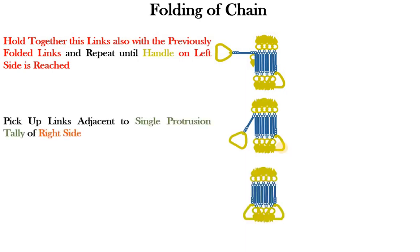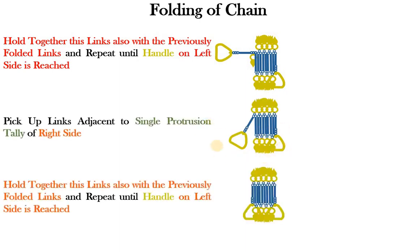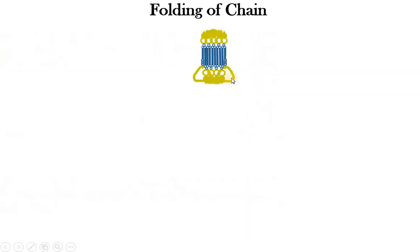Once completed you can see the completely folded chain. Once it is completely folded you need to tie it up or wrap it up with the thread kind of thing. That's it. This is the completely folded chain.